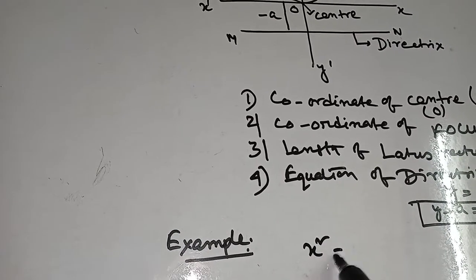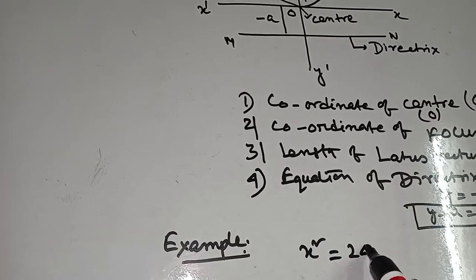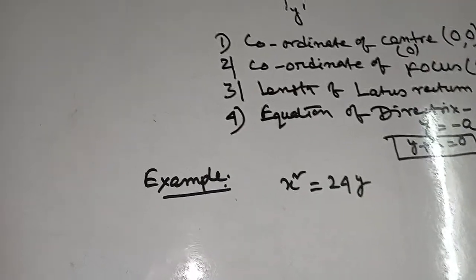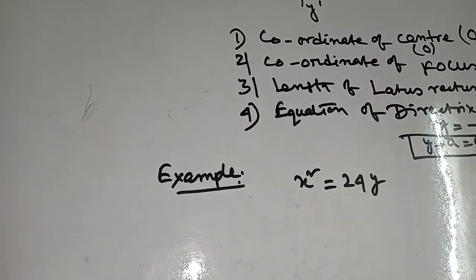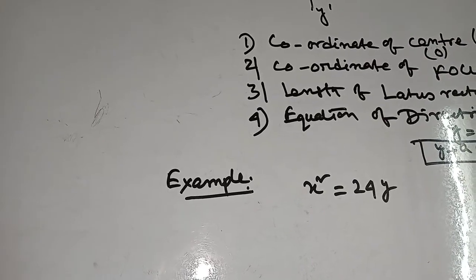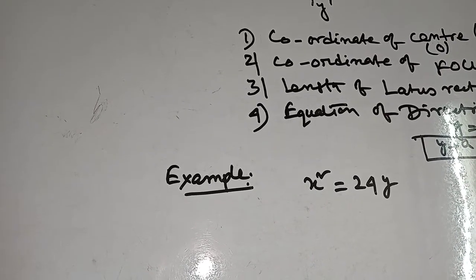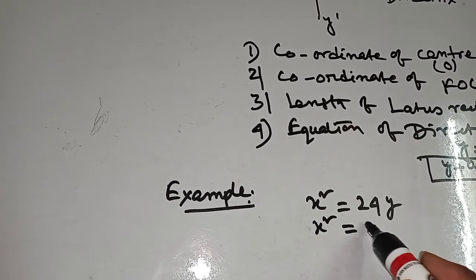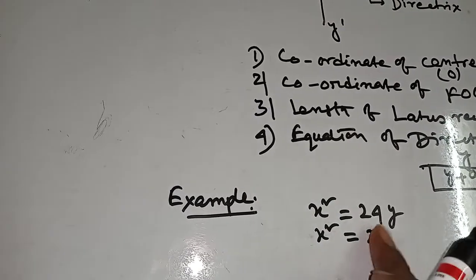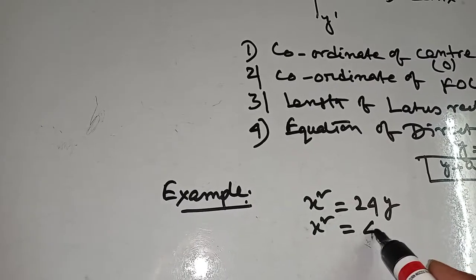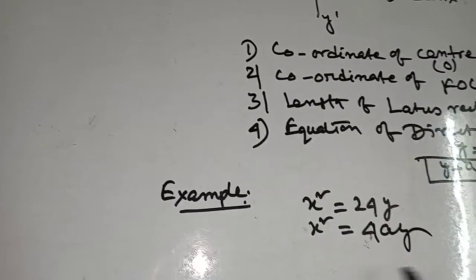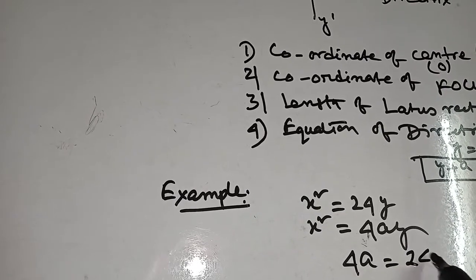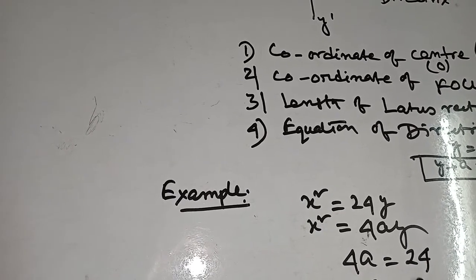Now one example: x square equal to 24y. At first you compare this with the main equation of parabola. 4A equal to 24, A equal to 6.